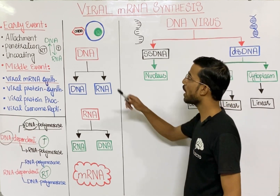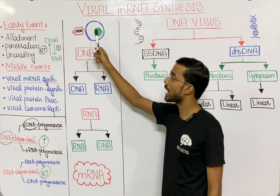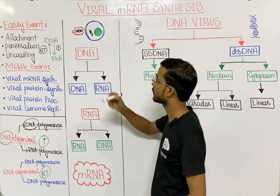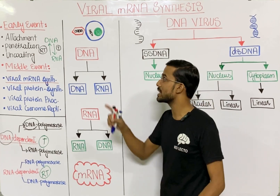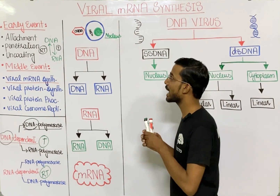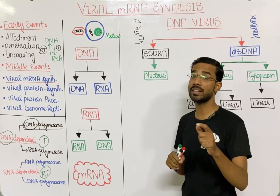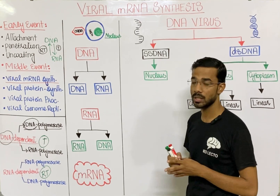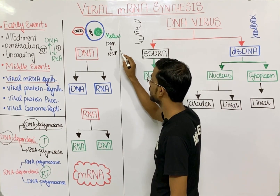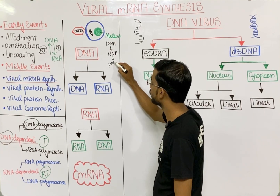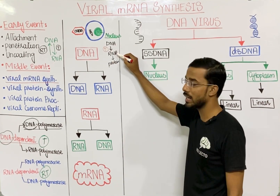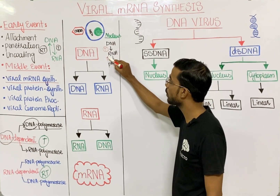First the virus attaches, penetrates, and uncoats in the host cell, and ultimately the genome is released. The polymerase enzymes are present in the nucleus of the host cell, so the viral genome will enter the nucleus for synthesis of its messenger RNA. From DNA, messenger RNA is synthesized — that is transcription — and from RNA, proteins are synthesized — that is translation.